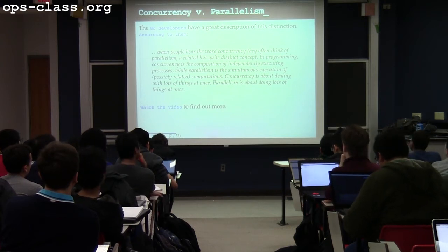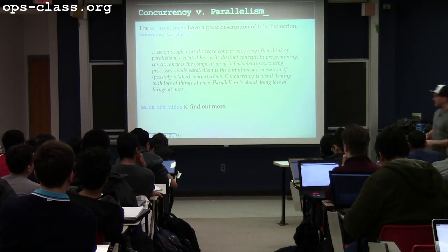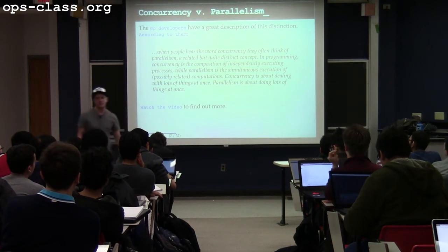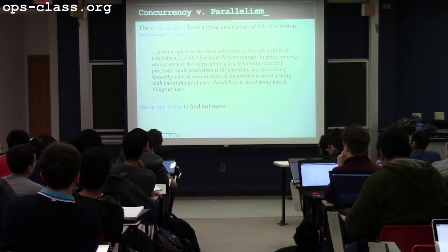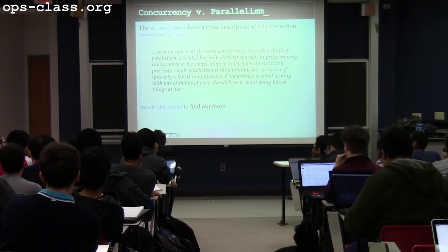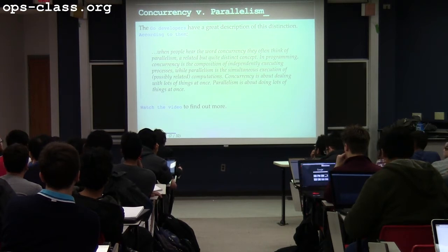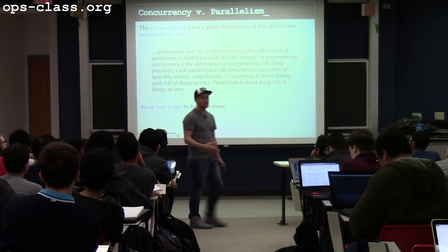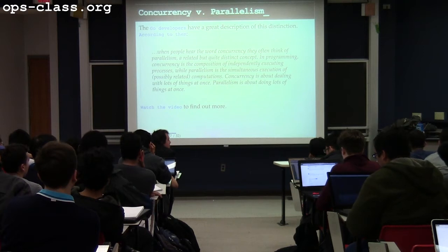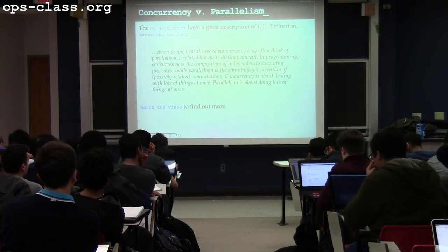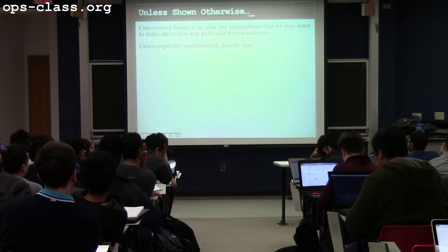There's a great talk by Rob Pike called 'Concurrency vs. Parallelism' worth watching. Concurrency is the composition of independently executing processes, while parallelism is the simultaneous execution of possibly related computations. Parallelism requires that two things can actually happen at once. But you don't need parallelism to write concurrent code — even before multiple cores, people wrote concurrent programs. Concurrency means you expose ways that different parts of the program can act independently; parallelism means things are actually running at the same time.